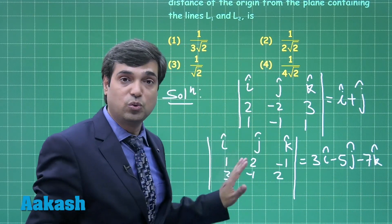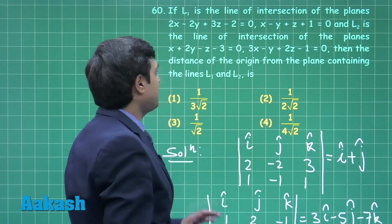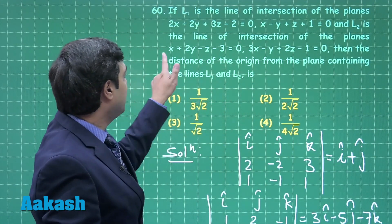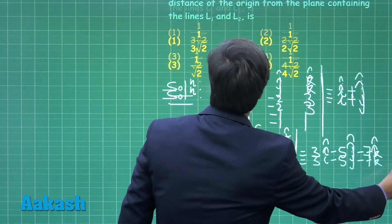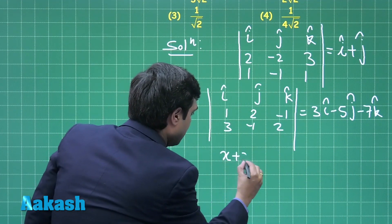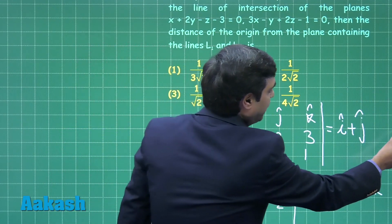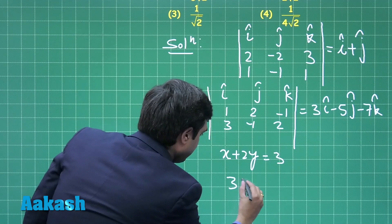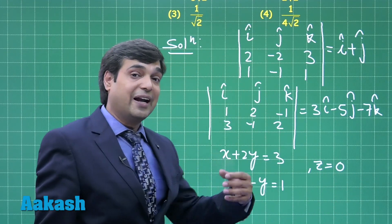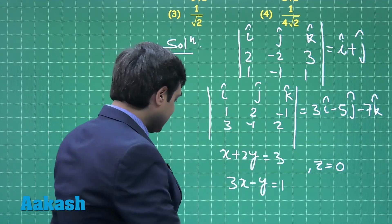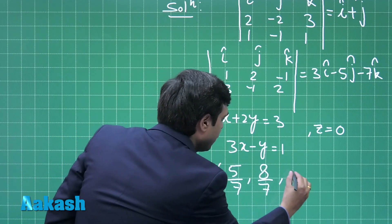Now we have the direction ratios of both lines. We need one point on either line. For line L2, substituting z = 0 gives us x + 2y = 3 and 3x - y = 1. Solving these two equations simultaneously, we obtain the point (5/7, 8/7, 0).